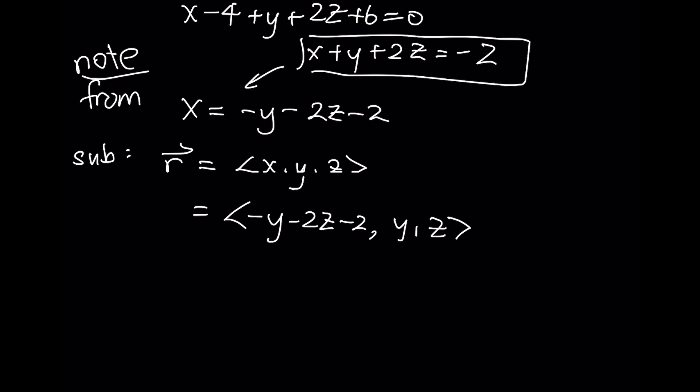I've somehow eliminated one of these letters here. I could use vector properties to split this into three separate vectors. The first vector is going to have nothing but Y, so it'll be <-Y, Y, 0>. The second vector is going to have nothing but Zs. And then the third vector is whatever is left: <-2, 0, 0>. I'm going to factor out the Y as a common factor in the first one. I'm going to factor out the Z as a common factor in the second one.